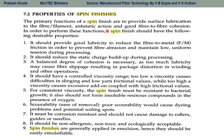The required properties of spin finish are: first, it should provide good lubrication to reduce fiber-to-metal friction, prevent fiber abrasion, and maintain low uniform tension during processing. Second, it should reduce static charges built up during processing. Third, a balanced degree of cohesion is necessary — too much lubricity may cause fiber seepage, resulting in package distortion during winding and other operations.